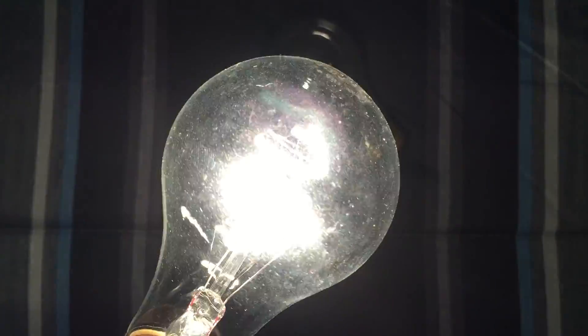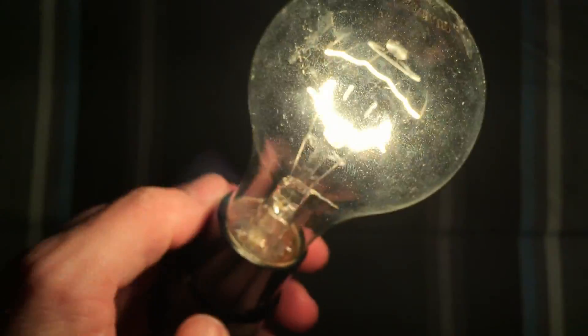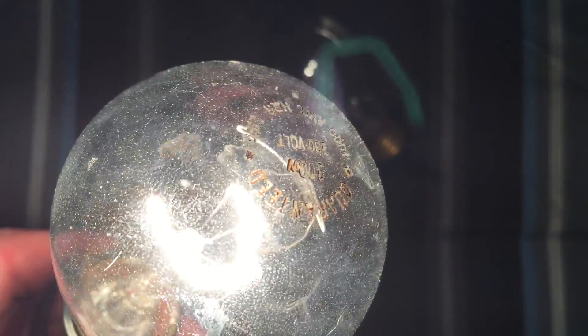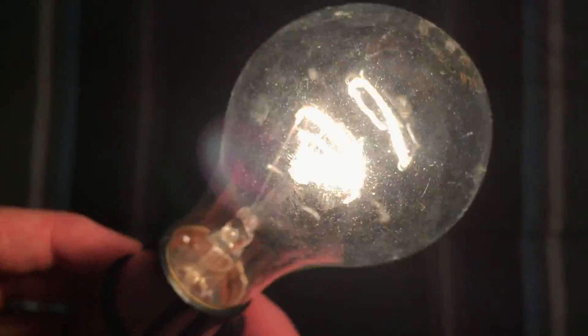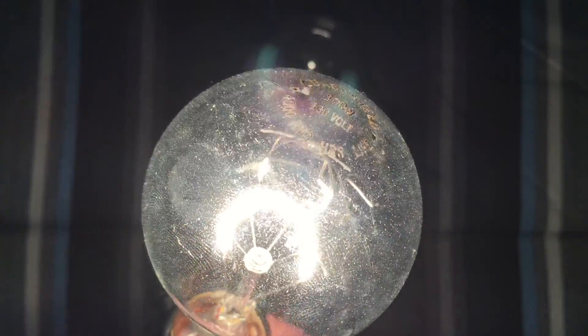Of course there's a bit more tint of yellow in it because it's 130 volt, so it's not going to be as nice and bright white as a regular incandescent bulb. Well, it is a regular incandescent bulb. I mean a regular one of 120 volts.